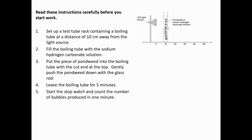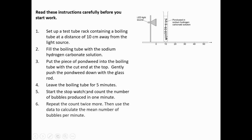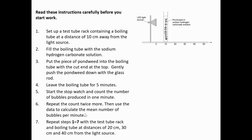Start the stopwatch and count the number of bubbles produced in one minute — that's the dependent variable measurement. Repeat the count twice more, then use the data to calculate the mean number of bubbles per minute. Doing repeats and calculating a mean will improve the accuracy of our data. Then repeat steps one to seven, but each time change the distance — do it again at 20 centimetres, 30 and 40 centimetres from the light source. This change is our independent variable.